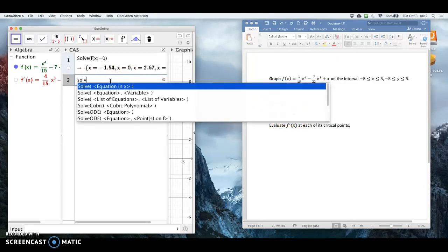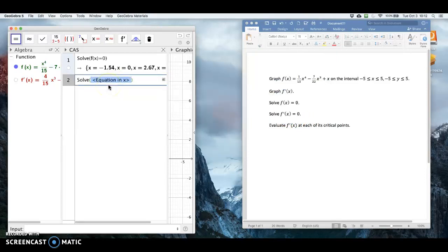I'm going to click on solve. I could just, once I get the option underneath, I could just click enter and type in f prime of x equals zero. And here I get three values, minus 0.91, 1.28, and 3.22.